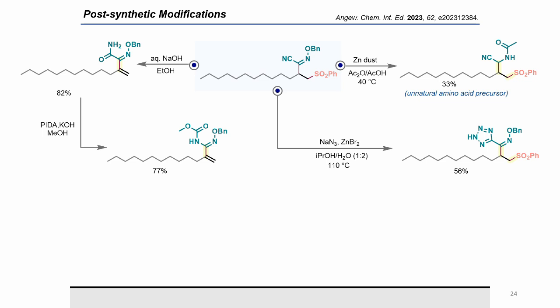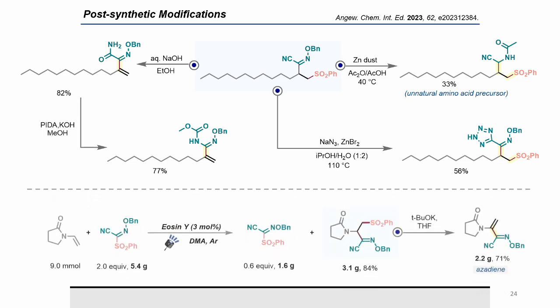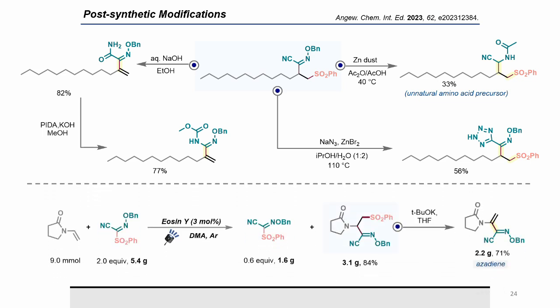A monosubstituted tetrazole was obtained via a 1,3-dipolar cycloaddition reaction with azide. We also performed a gram-scale experiment with N-vinylpyrrolidinone and 2 equivalents of sulfonyl oxymethar under standard conditions, recovering 0.6 equivalents of unreacted sulfonyl oxymethar along with 84% of the desired product. After hydrolysis treatment of the desired product, a multifunctionalized azadiene was synthesized with 71% isolated yield.